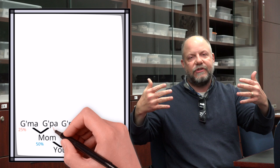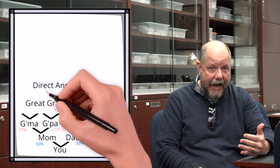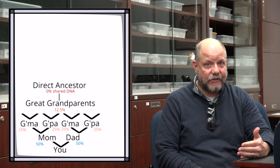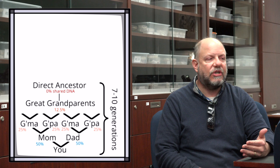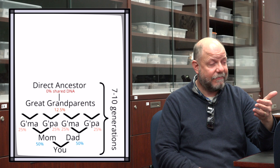You share half your DNA with your biological mother and half with your biological father. And a fourth on average with your grandparents, and an eighth with your great grandparents. And as you go further back, this gets less and less. You have relatives, ancestors, grandparents that you don't have any DNA from. Your genetic relationship with your ancestors goes away within seven to 10 generations. You start to get ancestors that you have no DNA from.